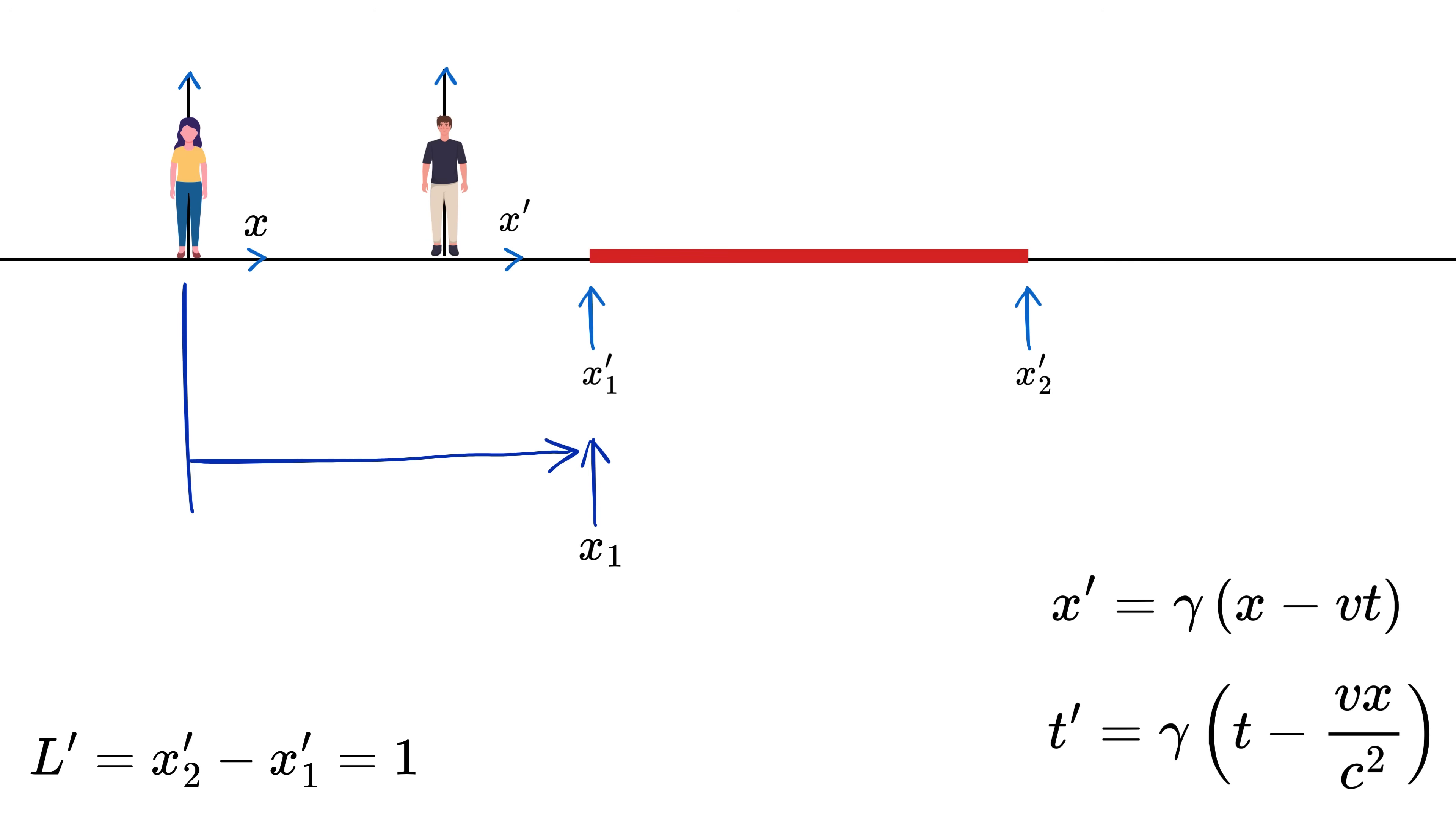Bob is holding the pole at rest in his own frame, so for him it's simple. He just measures the distance between the front and back ends without worrying about timing because in his view the pole isn't moving at all. Keep this in mind. Now if we assume that the left end of the pole is at x1 for Alice and time at which it is measured is t1, and the right end of the pole is at x2 with time t2.